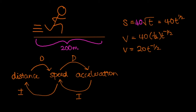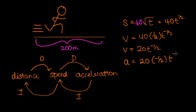Let's now estimate the acceleration of the runner 10 seconds after he begins the sprint. Acceleration is the derivative of speed, or the second derivative of distance. Taking the derivative of 20t to the minus a half: using the power rule we get 20 times minus a half t to the minus 3 over 2. Simplifying, 20 times minus a half gives minus 10, so acceleration equals minus 10t to the minus 3 over 2.